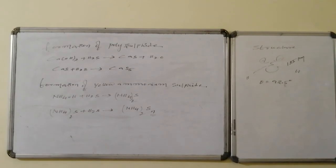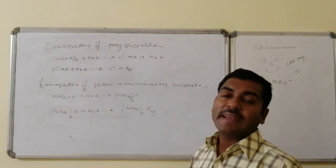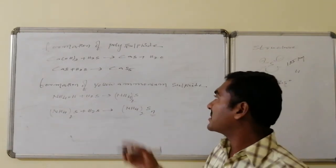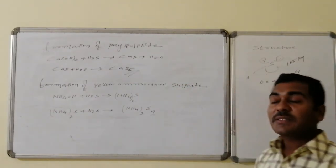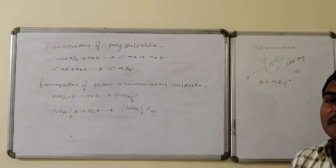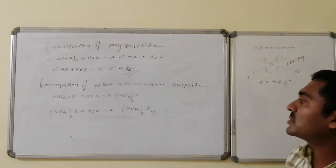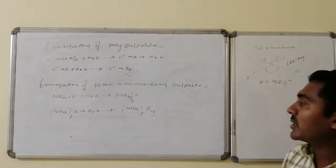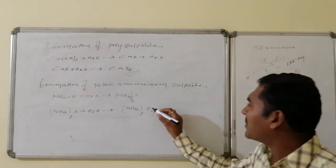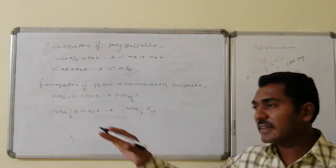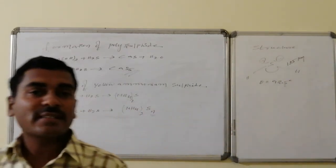H₂S also forms polysulfides: calcium hydroxide reacts with H₂S to form calcium sulfide, which with excess H₂S forms calcium pentasulfide. Ammonium hydroxide reacts with H₂S to form ammonium sulfide, which reacts further with H₂S to form ammonium polysulfide—a lengthy chain of sulfur atoms connected at both ends to ammonium groups.